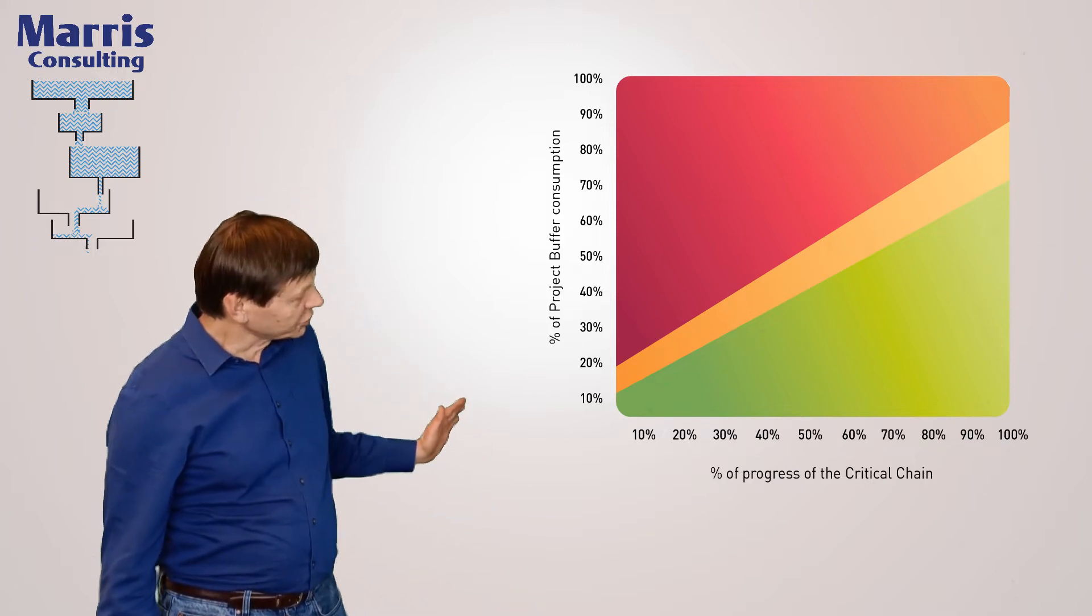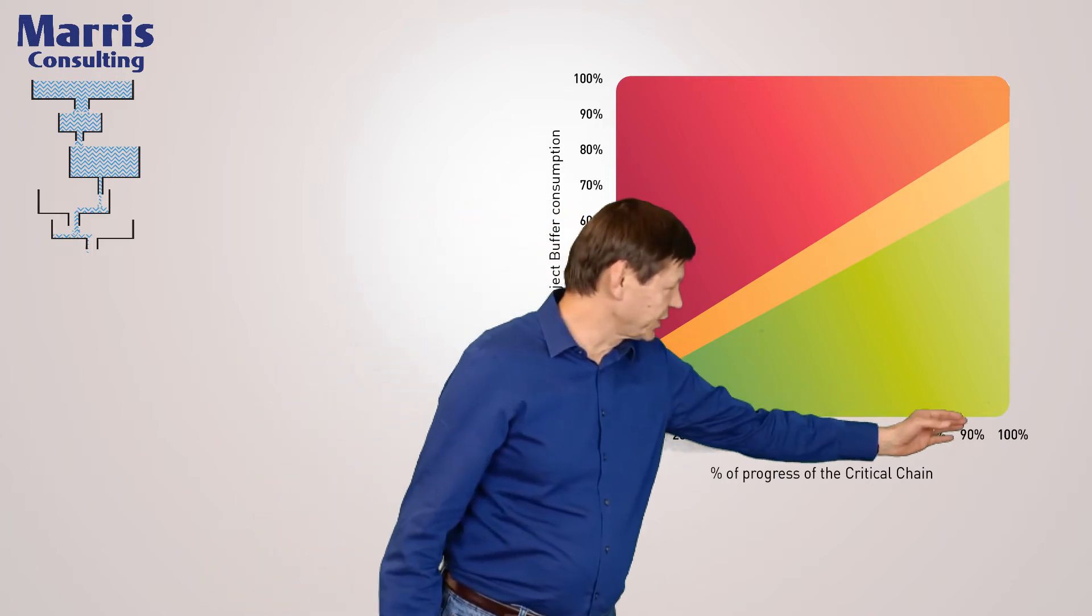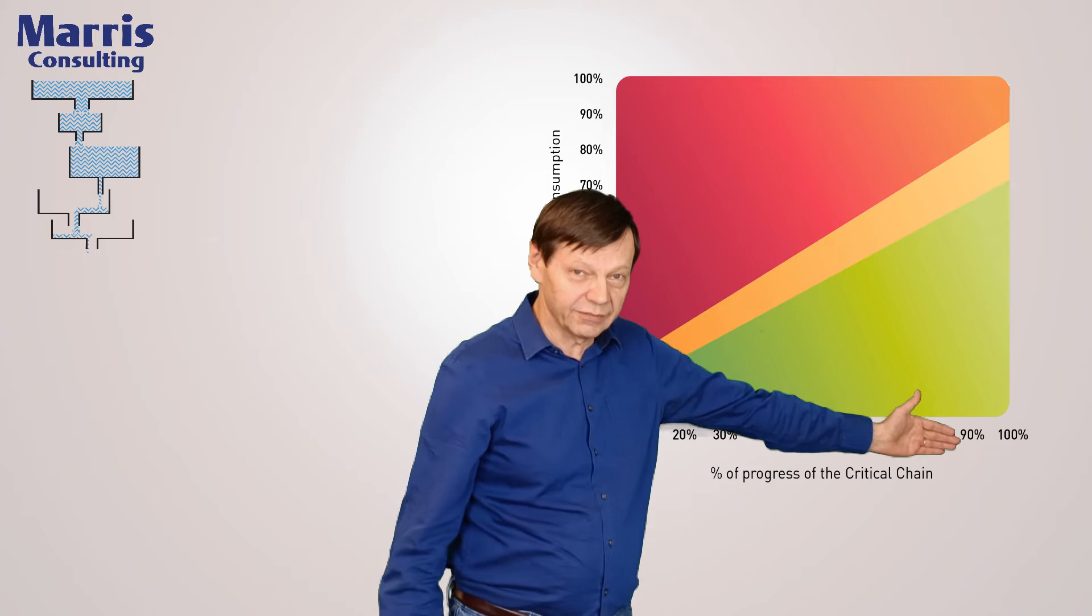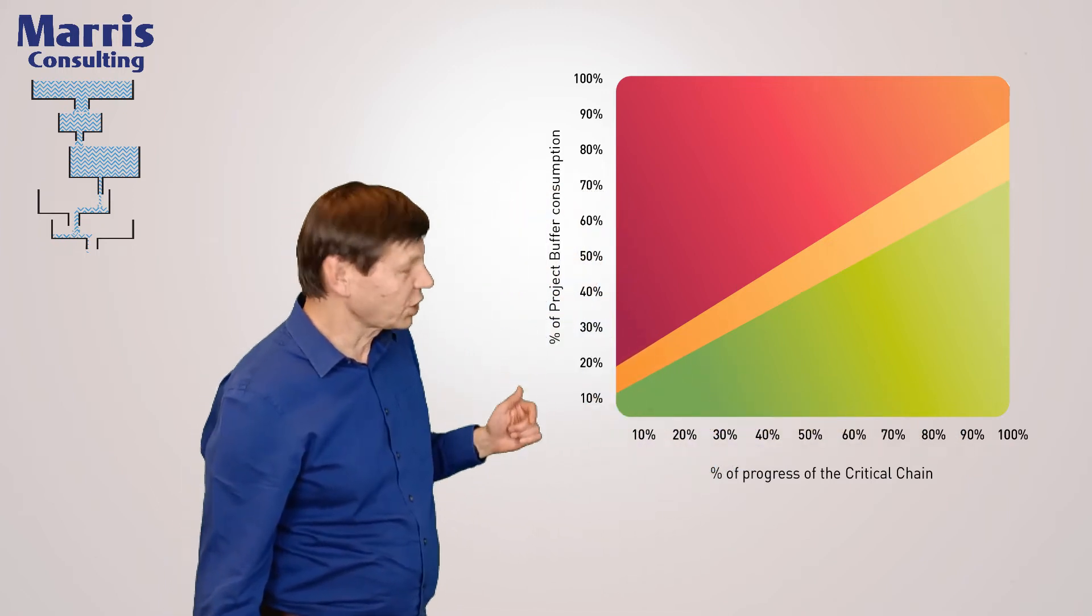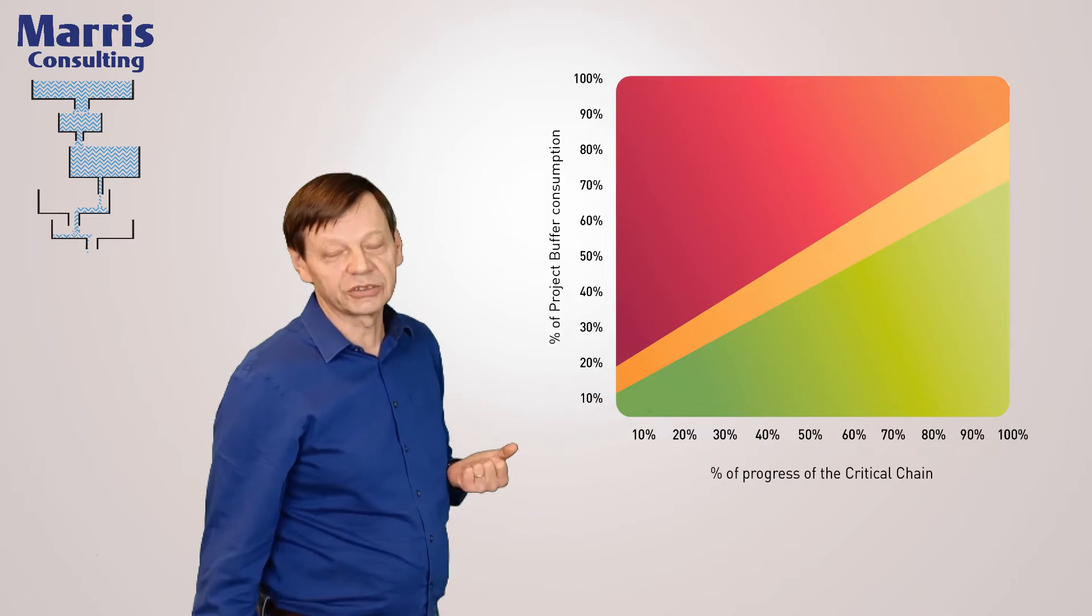We've got a horizontal axis which shows the progress of the project from its beginning to its end here. That measures progress on the critical chain, which is a close cousin to the critical path.